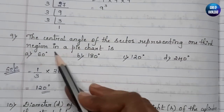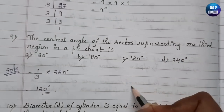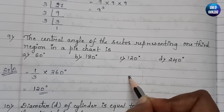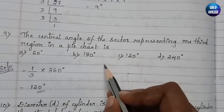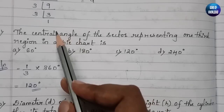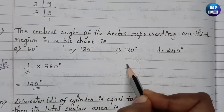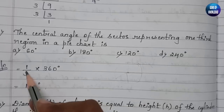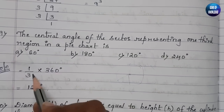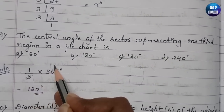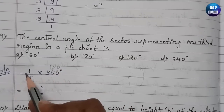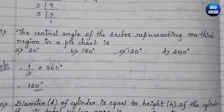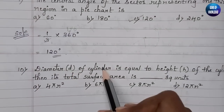The ninth question: the central angle of the sector representing one-third of a region in a pie chart. The total central angle of a circle is 360°, so one-third of 360° = 120°. Therefore, the correct answer is option C, that is 120 degrees.